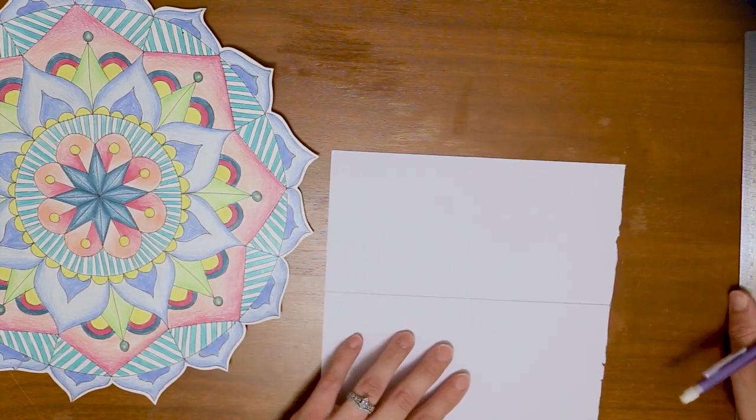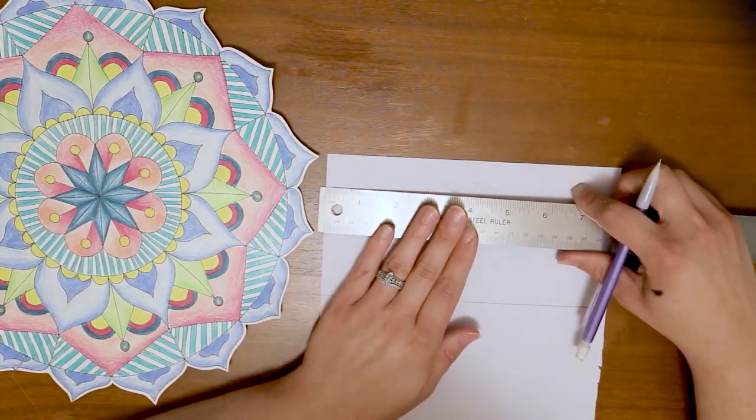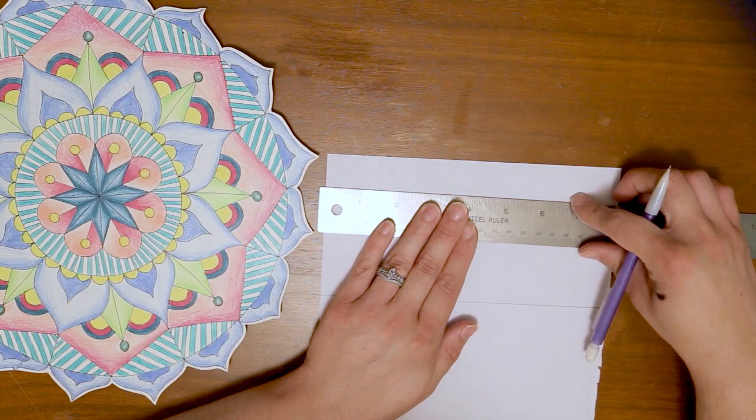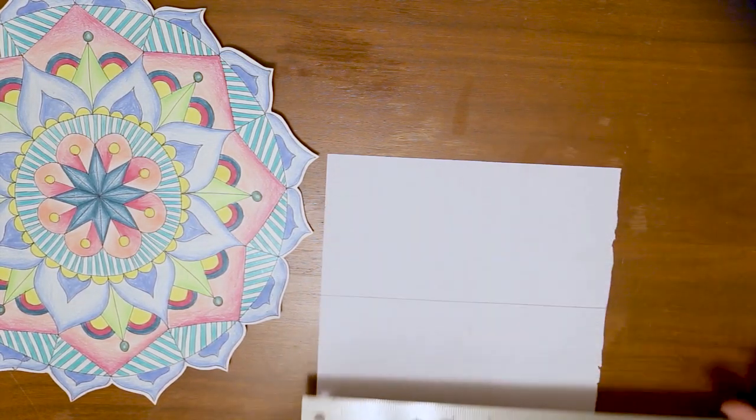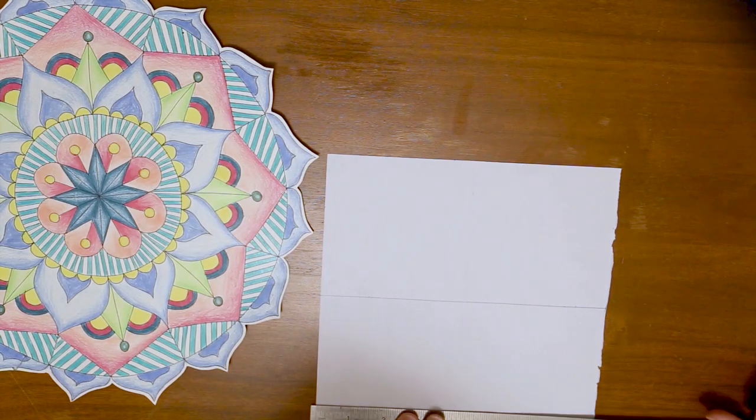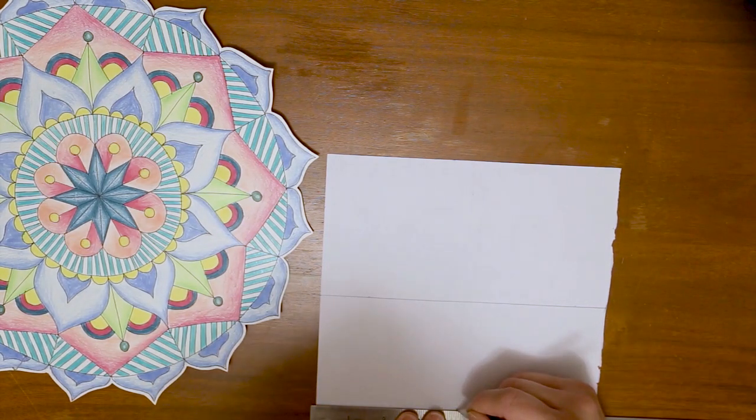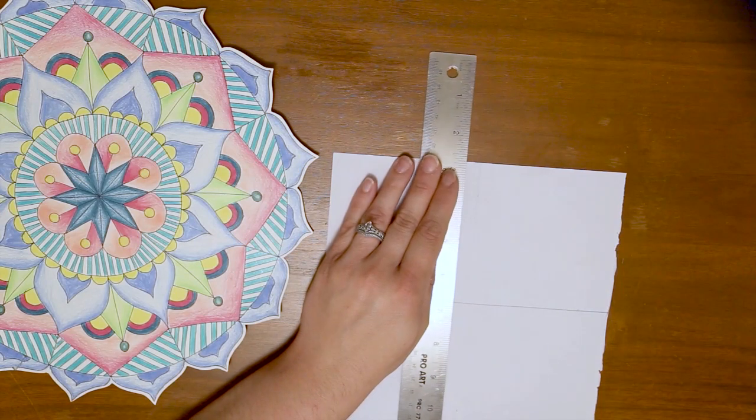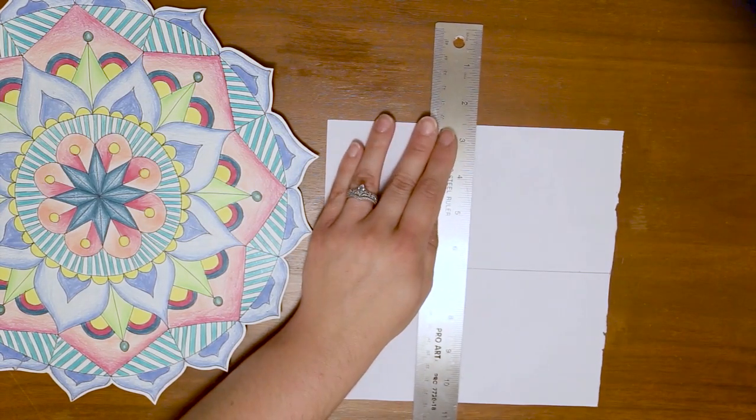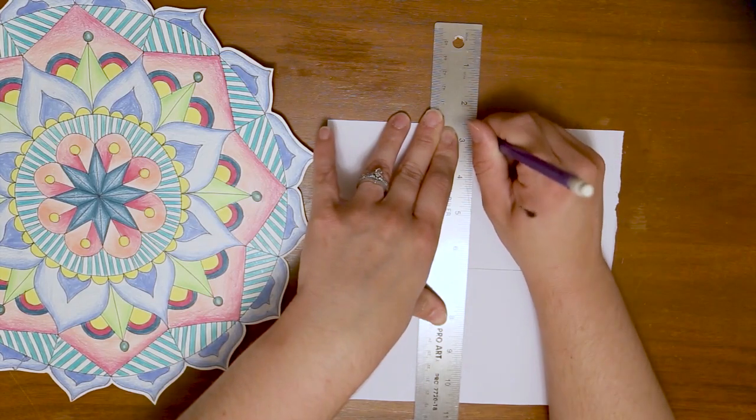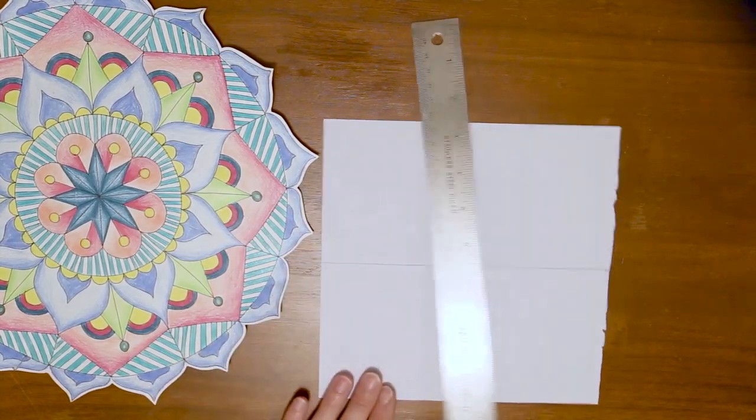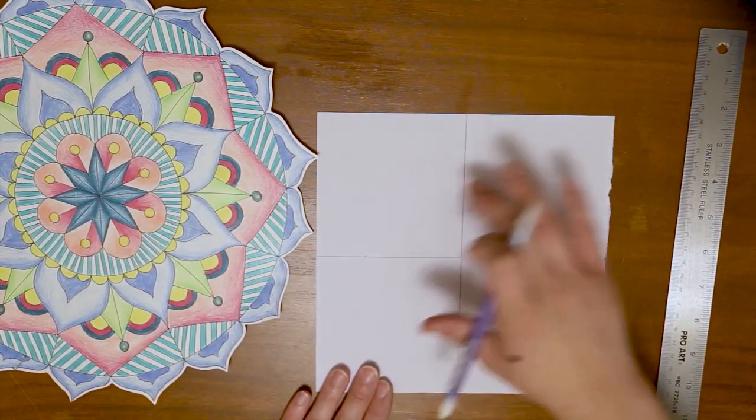Now I'm going to rotate my piece of paper and do the exact same thing over again. I'm going to measure over four inches because that's half of eight, and I'm using an eight by eight inch square piece of paper. And then I am going to make that vertical line that separates my piece of paper in half. If at any point I'm going too fast, you can always pause the video to catch up. I now have four squares.